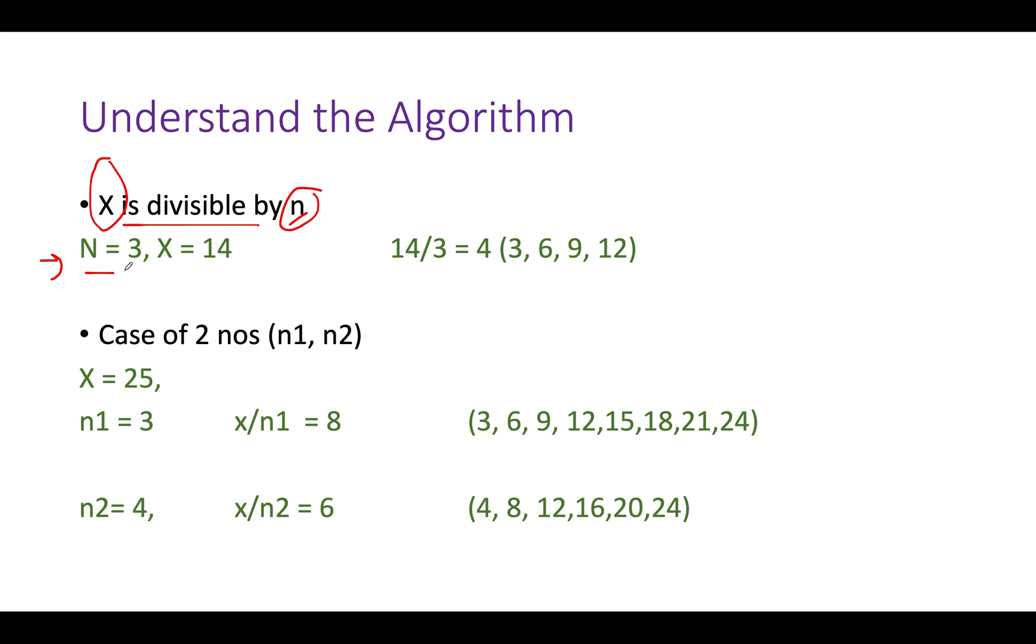We identify whether x is divisible by n. For example, here n is given as 3, x is given as 14. We divide x by 3, 14 by 3 gets us 4 and that simply signifies that there are four factors up till 14 of the divisor 3. Now let's extend this to a case where we are given two integers n1 and n2.